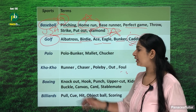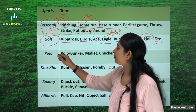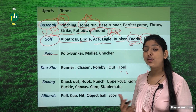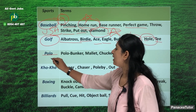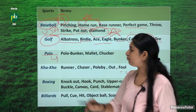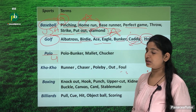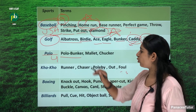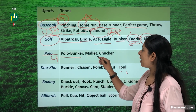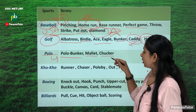The next sport is polo. How many players are in a polo team? There are four players in a polo team. Some terms associated with polo are bunker, mallet and chukker.